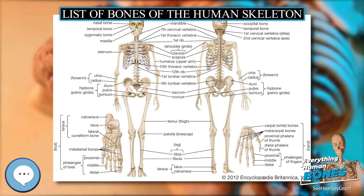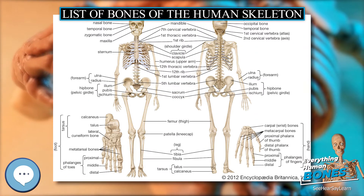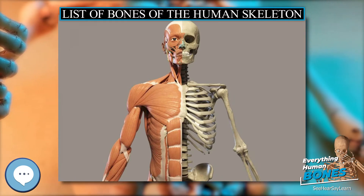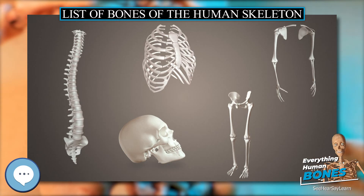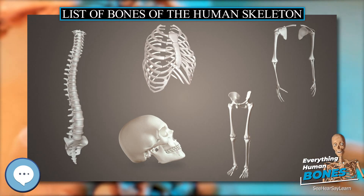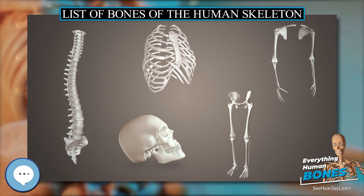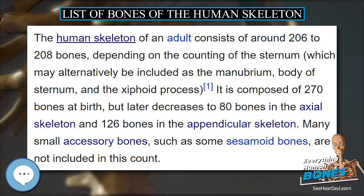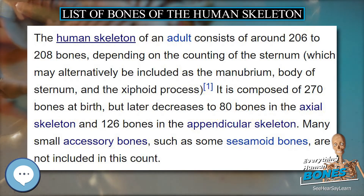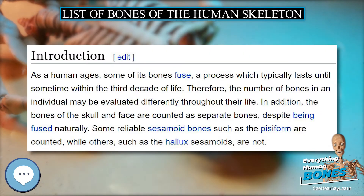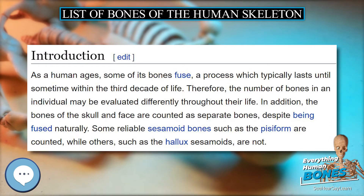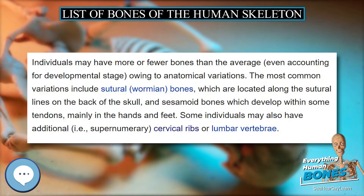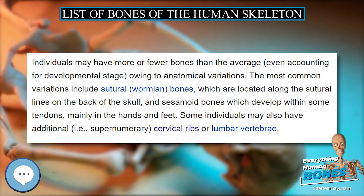Introduction. As a human ages, some of its bones fuse, a process which typically lasts until sometime within the third decade of life. Therefore, the number of bones in an individual may be evaluated differently throughout their life. In addition, the bones of the skull and face are counted as separate bones, despite being fused naturally. Some reliable sesamoid bones such as the pisiform are counted, while others, such as the hallux sesamoids, are not.